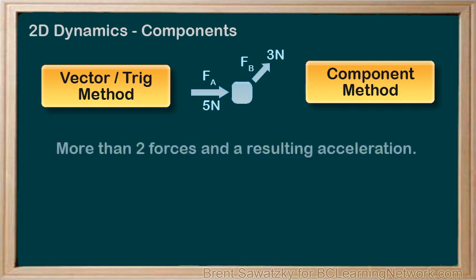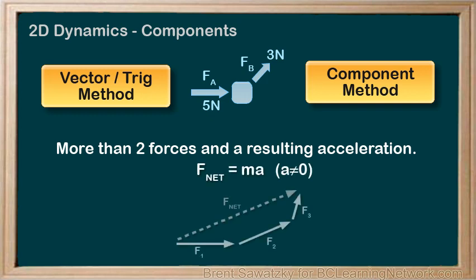If you have more than two forces involved, and a resulting acceleration or F net, then you'll often have more than three sides on your vector diagram. So it's no longer a triangle, and thus you might find that the component method might be easier.